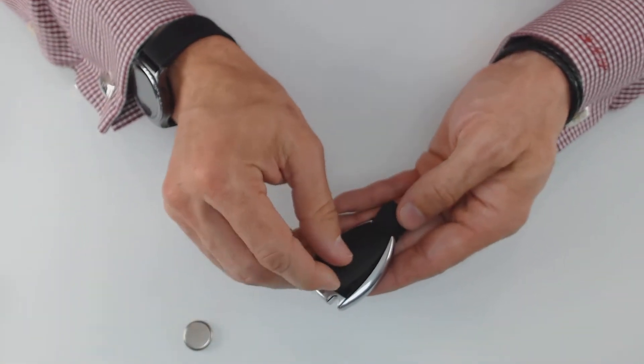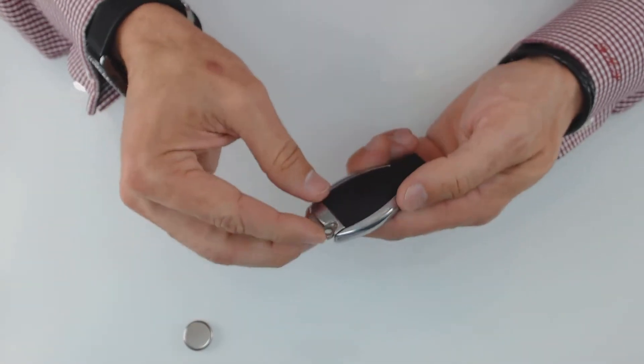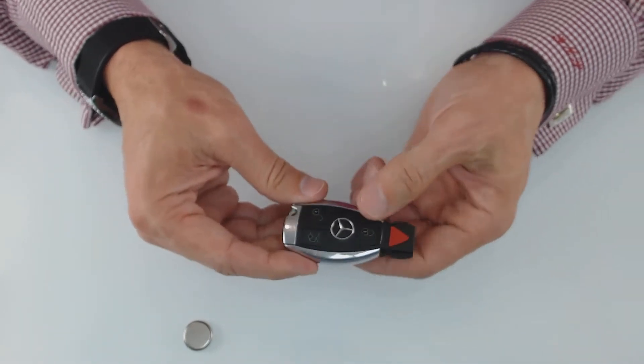You're going to put the cover back on. And then what you're going to do is reinsert the valet key. It's that easy.